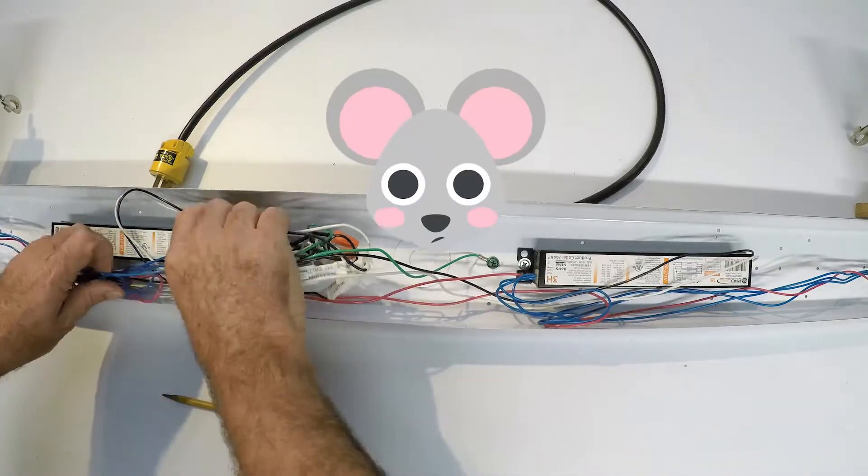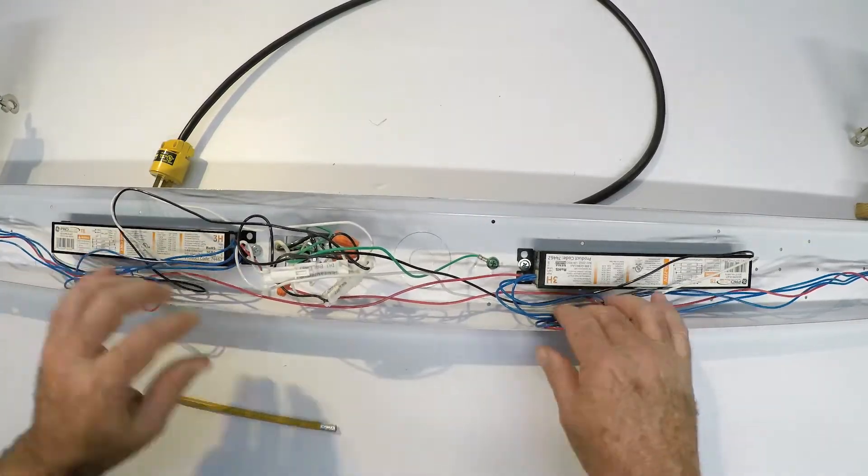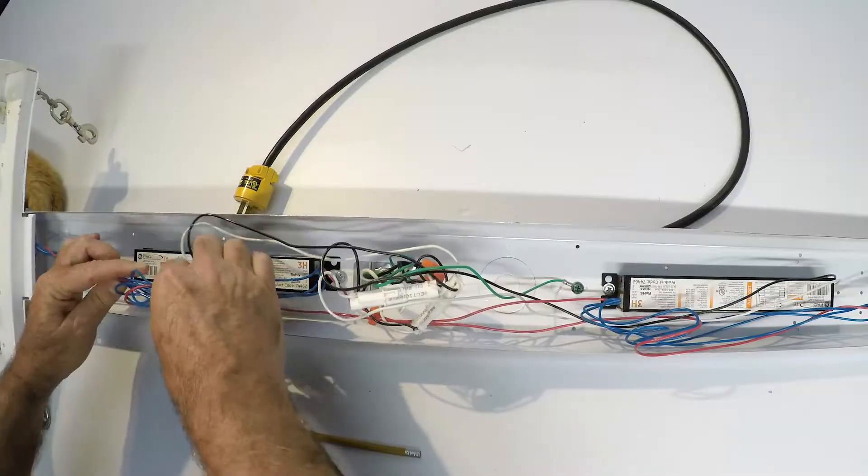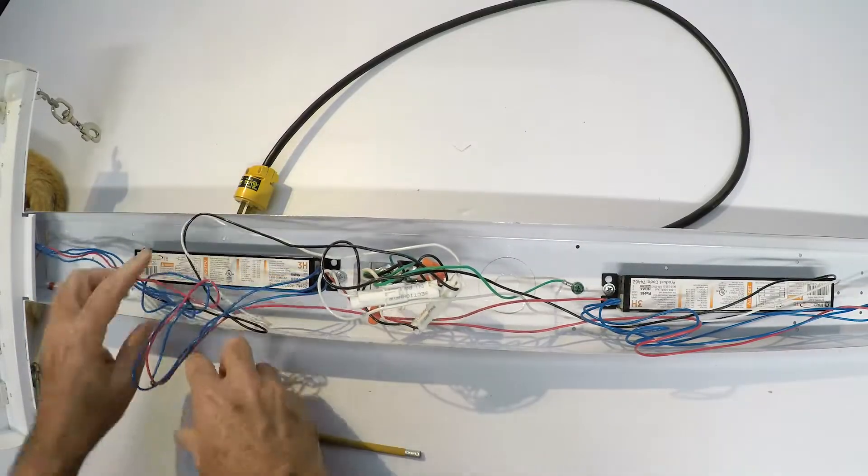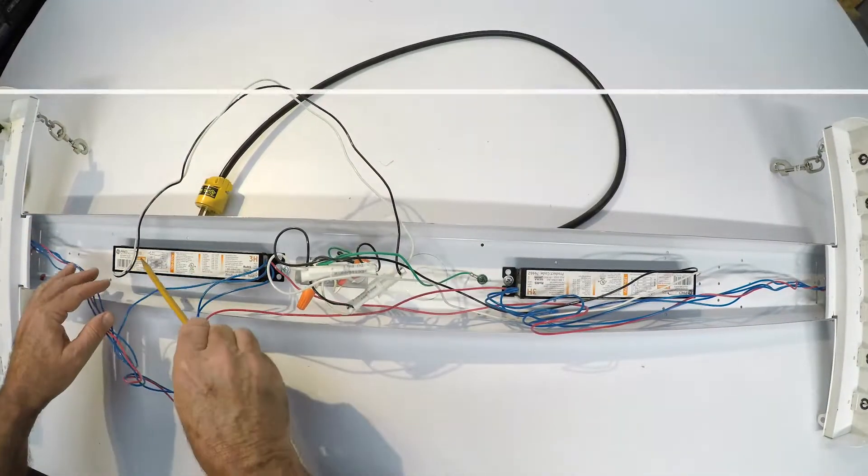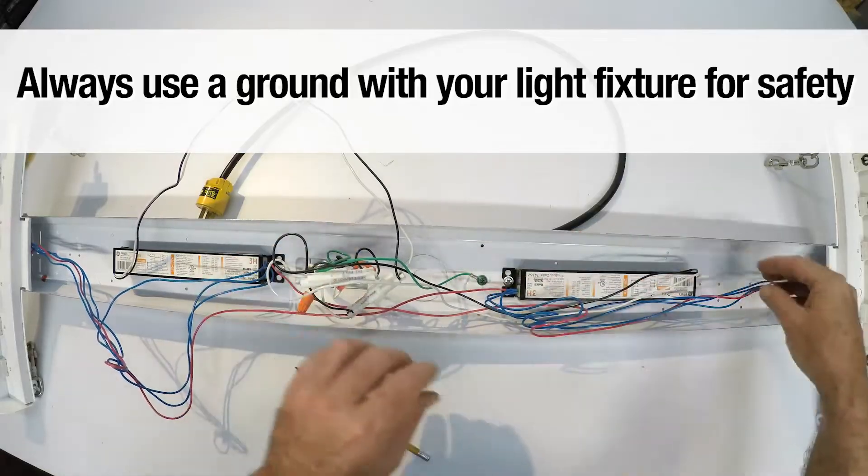Let's look at this rat's nest of wires. It's okay that they're all bundled up in here, all the excess. There's nothing wrong with that at all. We got some red and blue going to that end down there. Here's the hot and neutral going down to this ballast.